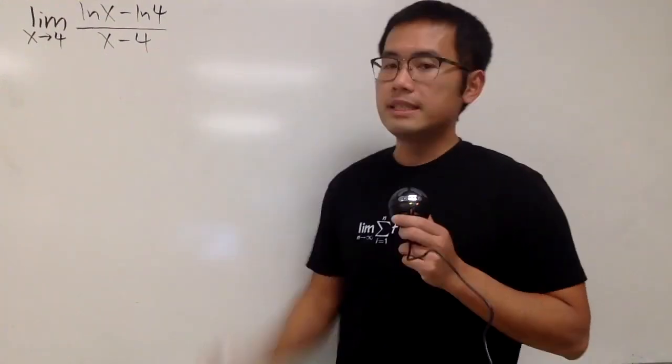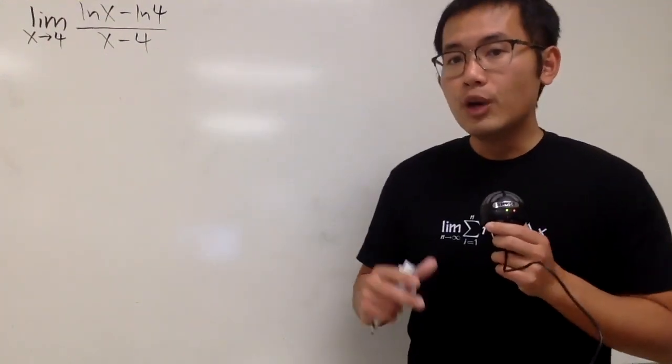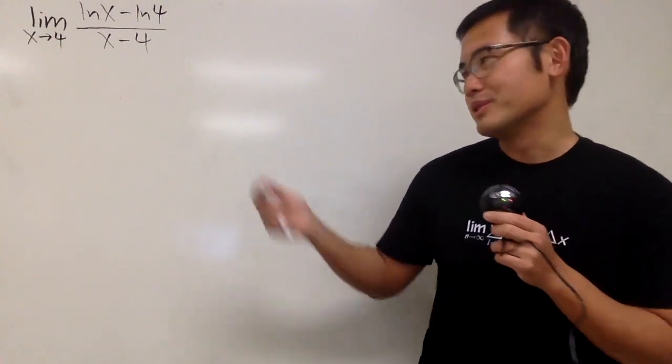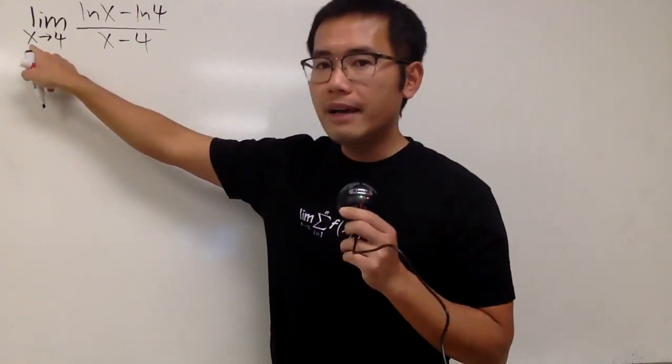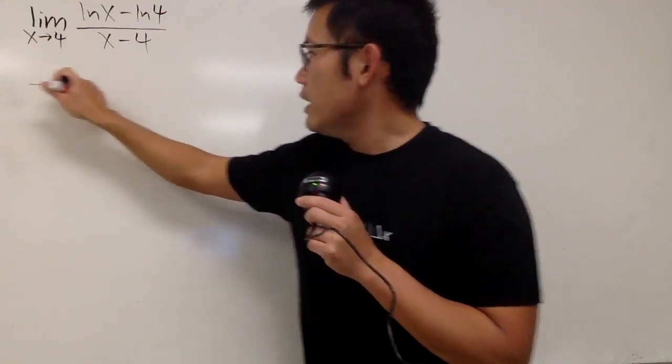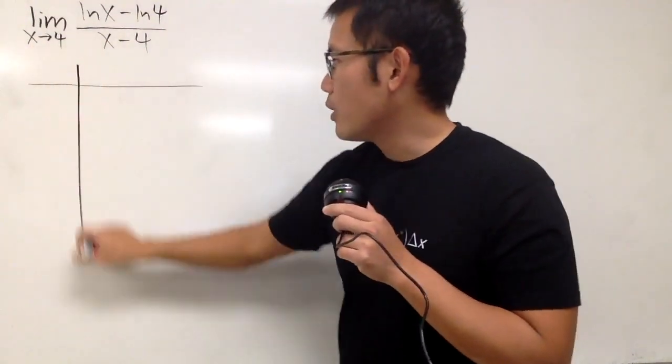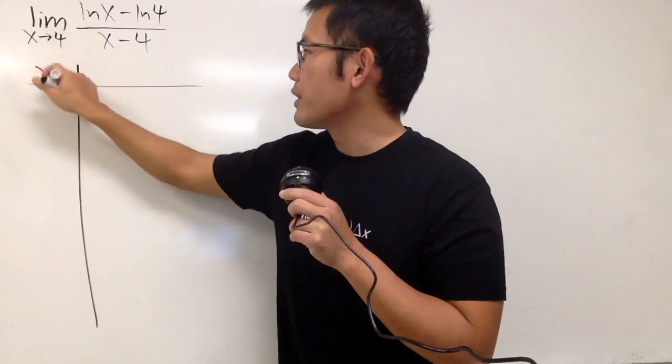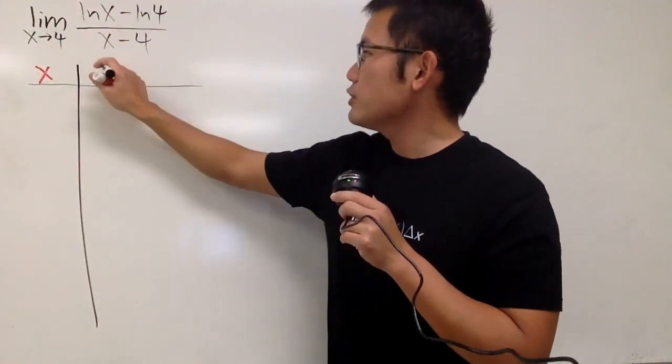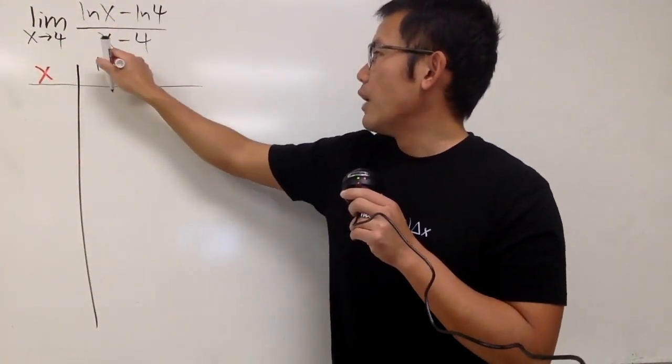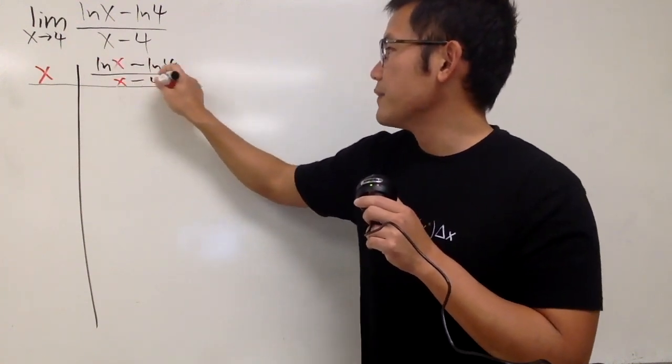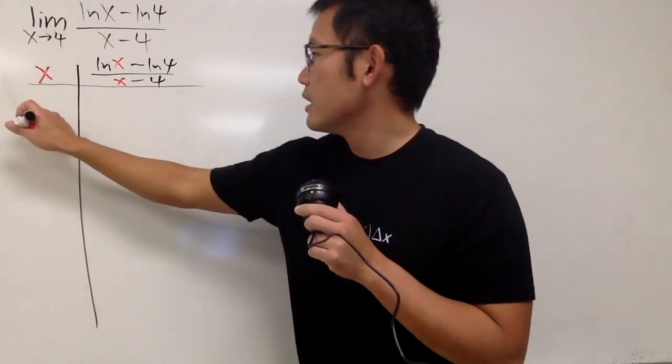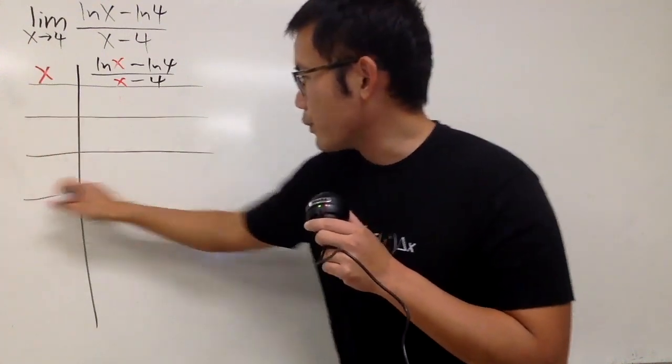Okay, for this question, we are going to figure out this limit, and the way that we are going to do it is we actually use a table of values to see what the limit is going to be. Notice that how we have x is approaching 4. Let's go ahead and set up a table, and let me just put down the x value right here.